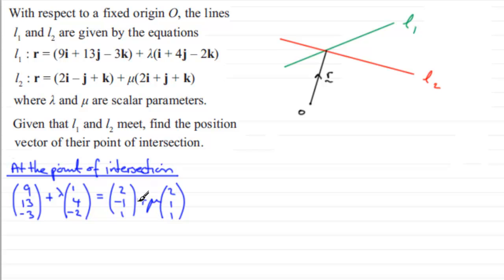Well, looking at the i components, let's just put a little subtitle in here, put i. What does it give us? Well, it gives us 9 plus lambda equals 2 plus 2mu. And what I'd want to do here is make lambda the subject, so I could use it later. So just taking 9 from both sides is going to give me lambda equals 2mu minus 7. And I'll put that equation on hold. We'll call it equation 1.